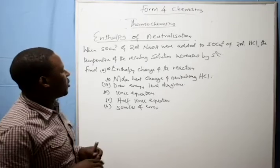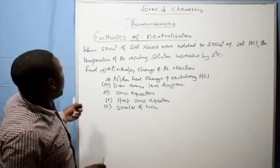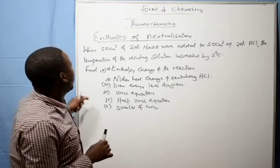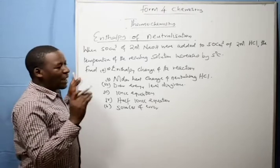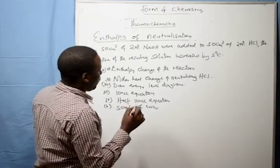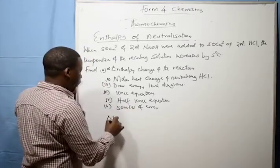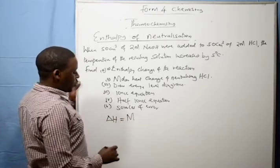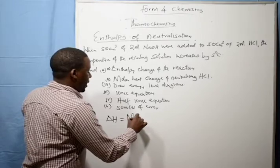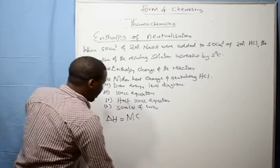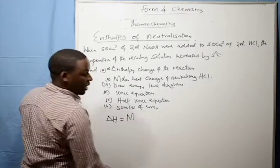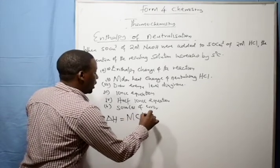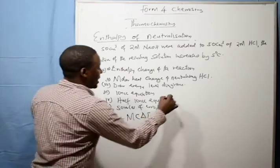So a neutralization reaction is a reaction where an acid and a base react to form salt and water. Water must be formed. Now when you are calculating enthalpy of neutralization, first of all you are going to find the mass. Use the formula: enthalpy change is equal to mass of the solution multiplied by heat capacity or specific heat capacity multiplied by change in temperature, written as delta T.